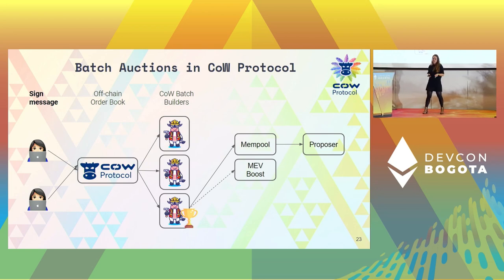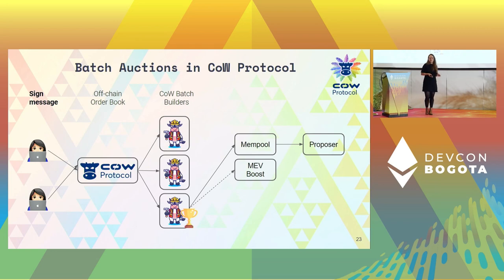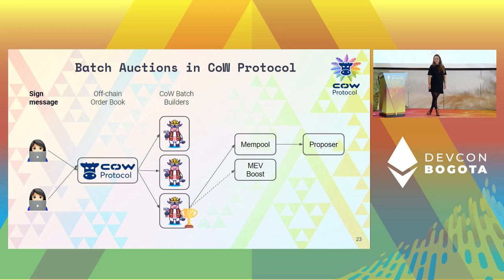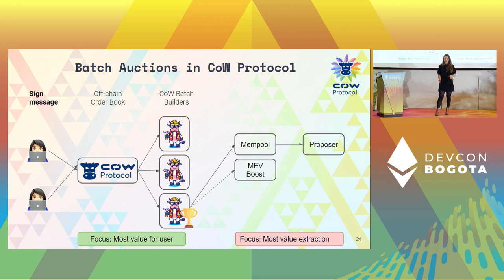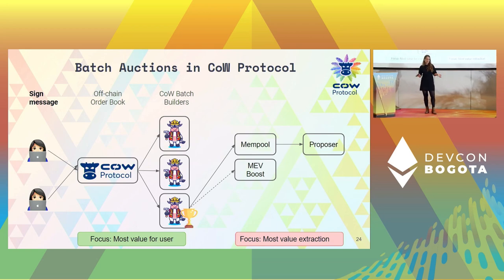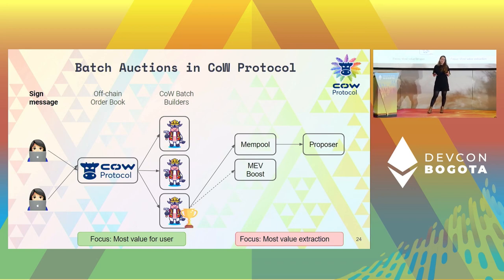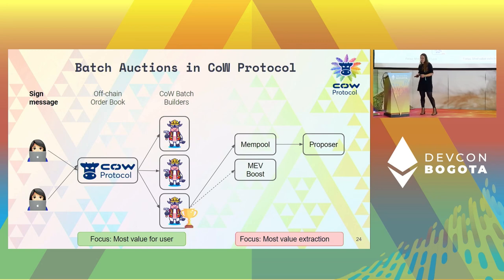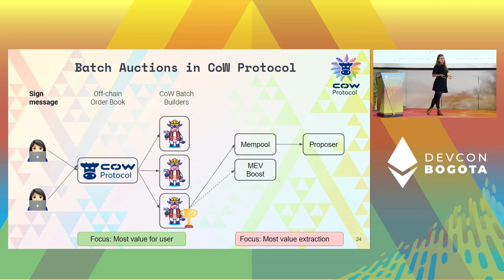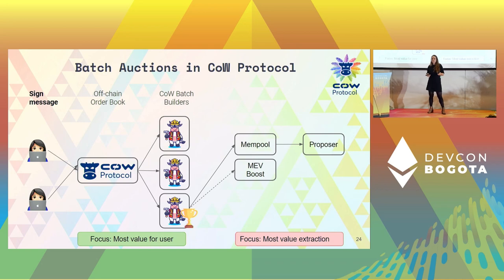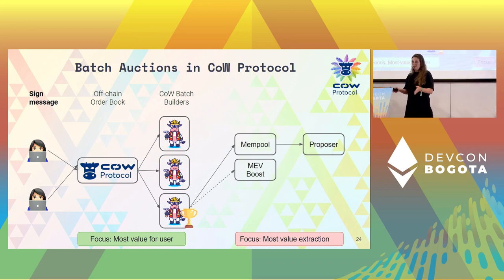The cow batch builders find a unique clearing price for all trades, and the winning batch builder settles these trades on-chain. This might look similar to the block builder competition on a high level, but it's actually quite the opposite. In the block builder competition you're focused on extracting the most value from transactions to win. On CowSwap, you maximize value for the users — the batch builder that finds the best possible prices for users is the one that wins the competition.